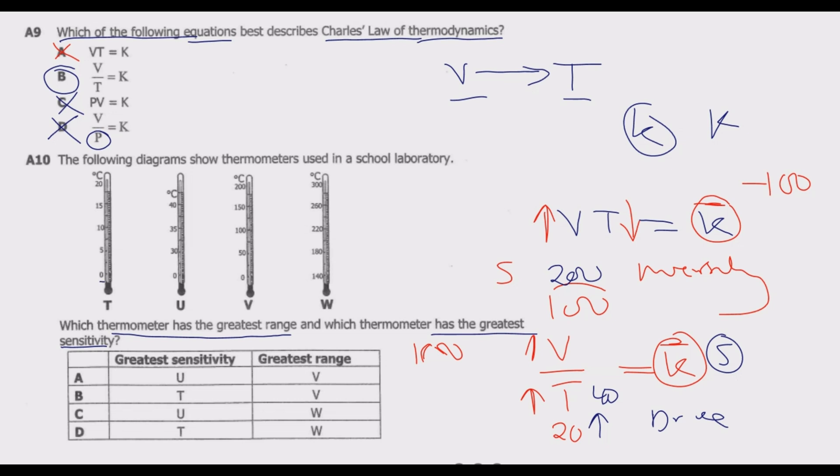Let us look at this. For T, the minimum is 0 and the maximum is 20, so 20 minus 0 gives us a range of 20. For U, minimum is 0, maximum is 40, so we get 40. For V, minimum is 0, maximum is 200, so we get 200. For W, minimum is 140 and maximum is 300, so 300 minus 140 gives us 160. Which one has the biggest range? It's 200, so V has the greatest range. So we take out C and D. We remain with A and B for sensitivity.